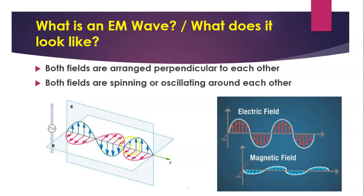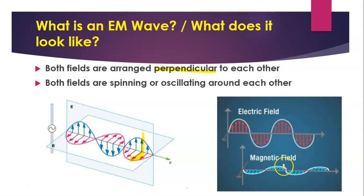The crest of the electrical field transverse wave comes out of the computer screen, then goes behind the computer screen, then back out in front. Do you see how these two things are at a 90-degree angle from each other? So what does an electromagnetic wave look like? It looks like two transverse waves that are perpendicular to each other. One transverse wave creates an electrical field and the other creates a magnetic field, arranged perpendicular to one another.